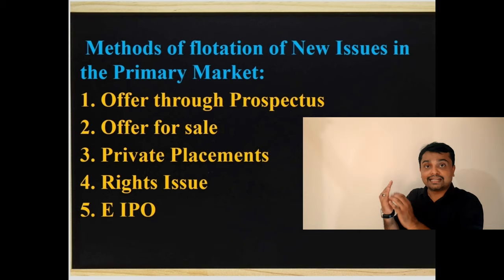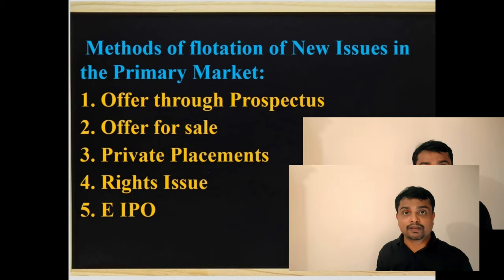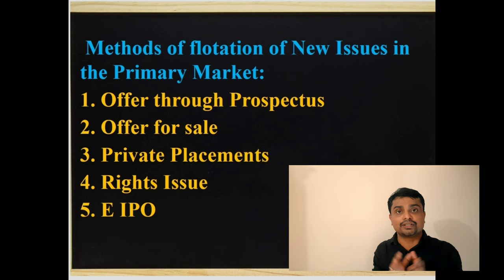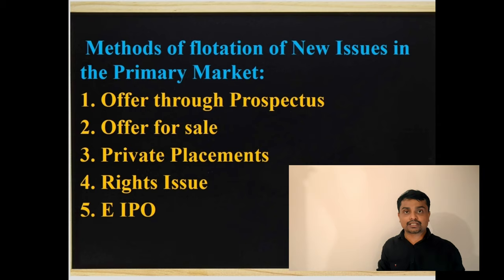The third method is private placement, where securities are offered to selected individuals or institutions. The fourth method is a rights issue. As per Section 81 of the Companies Act, when a company makes a further issue of shares, it should first be offered to existing shareholders — it is their right, and such shares are called right shares.